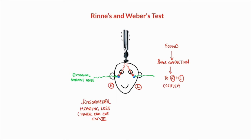In sensorineural hearing loss, the problem is not with the signal getting from the external and middle ear towards the inner ear — the problem is within the inner ear itself. In Weber's test, the tuning fork placed on top of the head will still conduct vibration through the bone to both cochleae. However, if there is a sensorineural hearing loss on the right side, that cochlea will not be as receptive to the sounds reaching it — whether from the external environment or through bone — and the patient will not hear the bone conduction as well on that side.